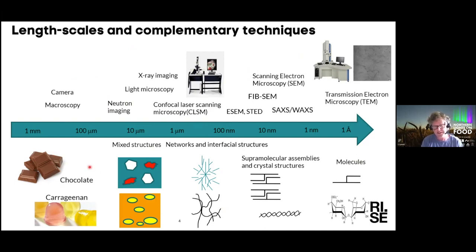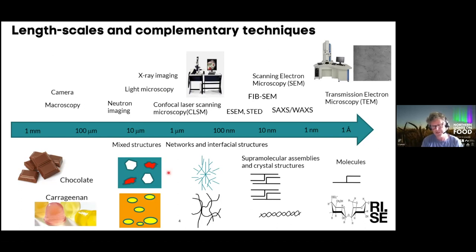If we look into some examples, we could take chocolate. At a length scale of about 10 micrometers or longer, you can say it's like a composite structure of a continuous fat crystal network. There you also have liquid oil, sugar particles, and cocoa particles. If you go down to about 100 nanometers, 500 nanometers, or one micrometer or so, you could start to see the fat crystal network, which determines a lot of the properties of the chocolate.